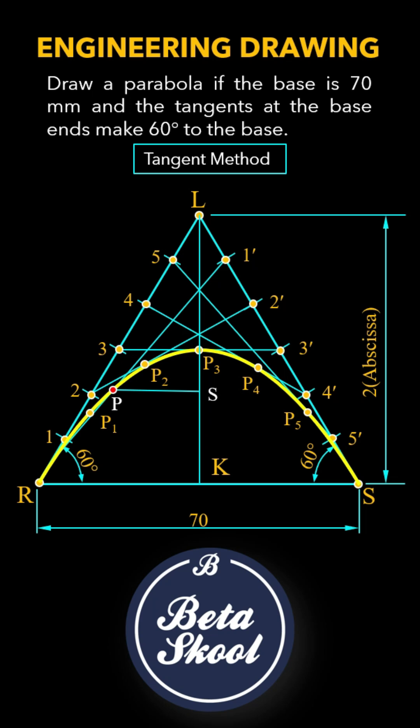Mark SP3 equal to P3T on the line LK. Now join TP and extend it. This is the tangent to the parabola.